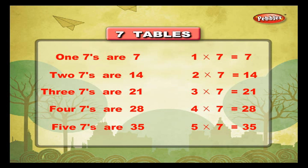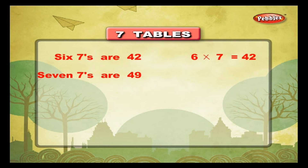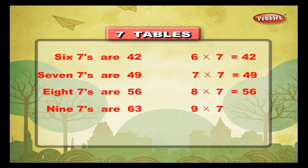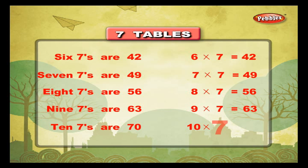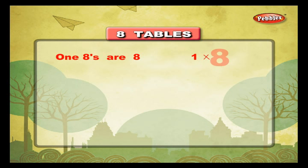6 sevens are 42, 6 sevens are 42. 7 into 7 is equal to 49. 8 sevens are 56, 8 into 7 is equal to 56. 9 sevens are 63, 9 into 7 is equal to 63. 10 sevens are 70, 10 into 7 is equal to 70. 8 tables.